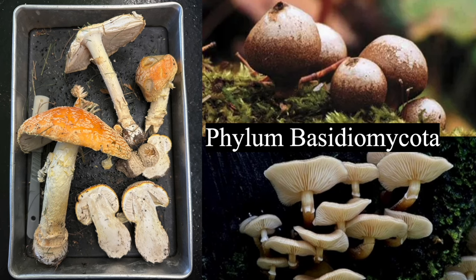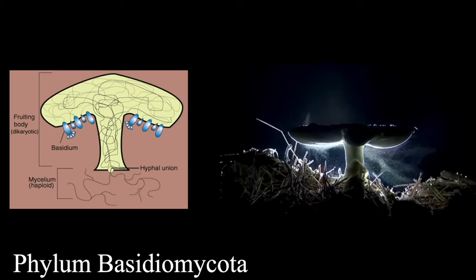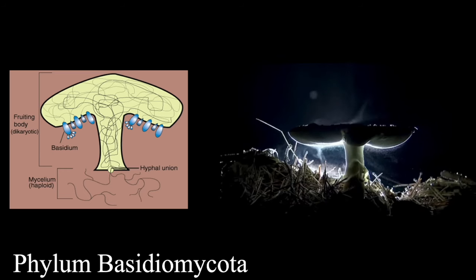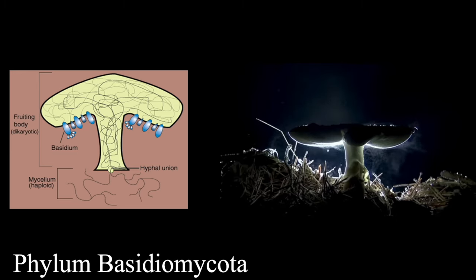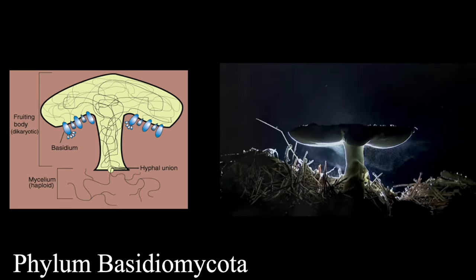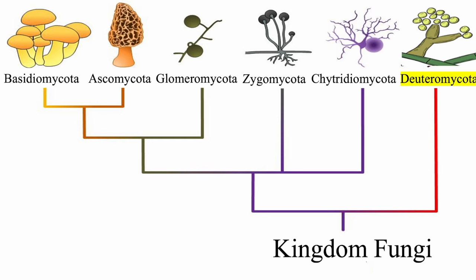Basidiomycota is the phylum that includes the classic mushroom shapes that dot our forests. They are unique because of the basidium — cells on the gills of mushrooms where mushroom spores are made. Spores are released from the fruiting body and can be spread by wind, water, or even animals.